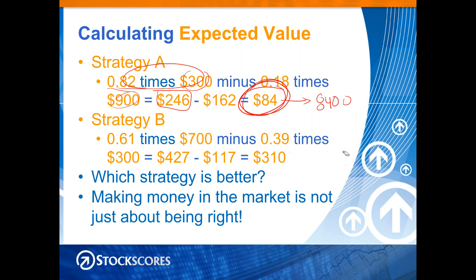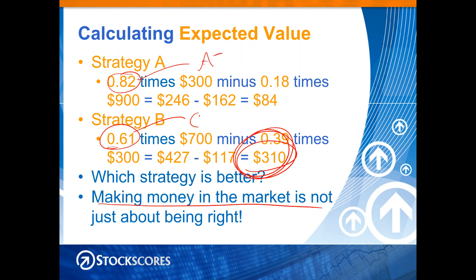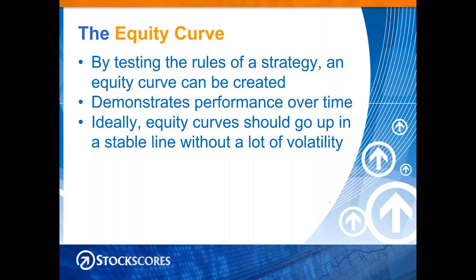Strategy B is clearly better — $310 expected value versus $84. Over 100 trades, Strategy A makes $8,400 while Strategy B makes $31,000. We're programmed in our society to think that being right is the goal. In school, 61% is a C, but here this is the 'A' strategy because it makes more money. Making money in the market is not just about being right — it's about how much you make when you are right versus how much you lose when you are wrong.